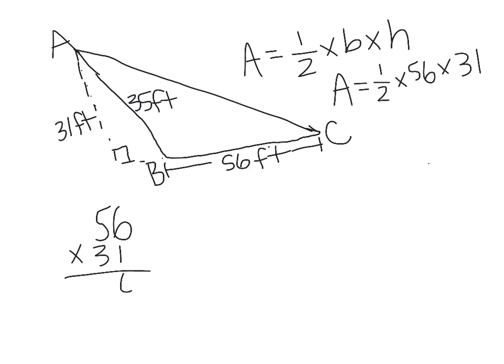1 times 6 is 6, 1 times 5 is 5, 3 times 6 is 18, 3 times 5 is 15, plus 1 is 16. 6 plus 0 is 6, 5 plus 8 is 13, 1 plus 6 is 7, and you have 1. Now we're going to take 1736 and we're going to divide that by 2 because that's the same thing as multiplying by one half.